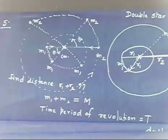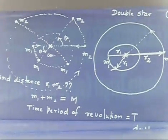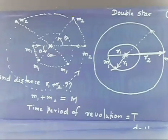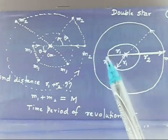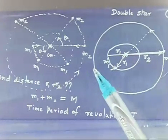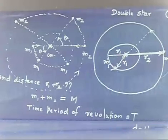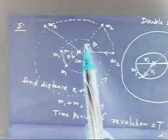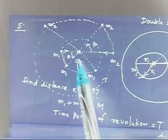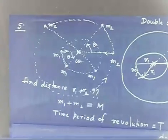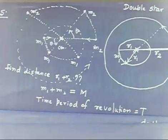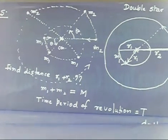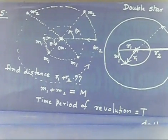You are given: total mass of the system is capital M, that is m1 plus m2 equals M. You are also given the time period of revolution is T. The time period will be the same for both — if one completes one circle, the other also completes one circle. You have to find the distance r1 plus r2.